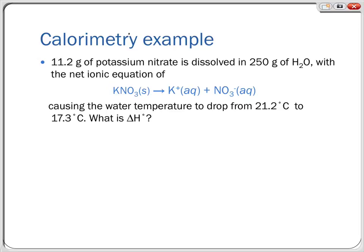Let's look at another example. 11.2 grams of potassium nitrate is dissolved in 250 grams of water. The net ionic equation is KNO₃(s) → K⁺(aq) + NO₃⁻(aq). Dissolving KNO₃ causes the water temperature to drop from 21.2°C to 17.3°C. We want to find ΔH° for this reaction. Again, we need the moles of reaction and Q.